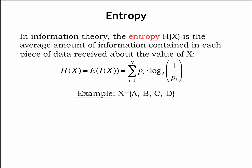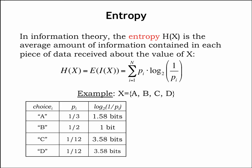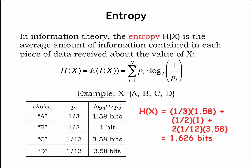Here's an example. We have a random variable that can take on one of four values: A, B, C, or D. The probabilities of each choice are shown in the table along with the associated information content. Now we'll compute the entropy using the probabilities and information content. We have the probability of A times its associated information content, plus the probability of B times its associated information content, and so on. The result is 1.626 bits.